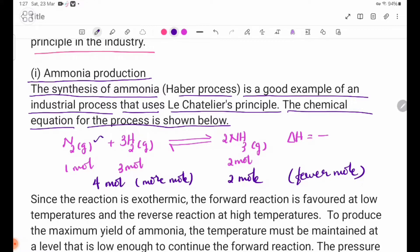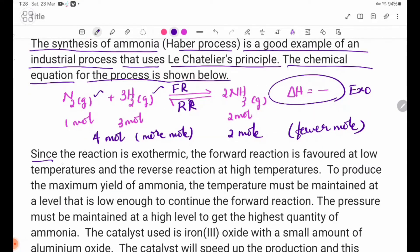Nitrogen gas plus hydrogen gas, reversible reaction to ammonia gas. Delta H is negative. The reaction is exothermic. The forward reaction is favored at low temperatures and the reverse reaction at high temperatures.